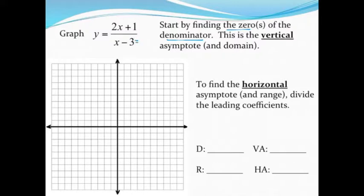And so the first thing that I like to do is either think about in my head what would make the denominator equal to 0 or actually solve that equation, set the denominator equal to 0 and then solve it. If I do, I add 3 to both sides and I get x equal to 3.